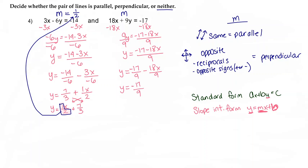But I can simplify negative 18x over 9, and that simplifies to negative 2x — you have the option of writing over 1. Then switching terms gives y equals negative 2x over 1 minus 17 over 9, and our slope for this equation is negative 2 over 1.